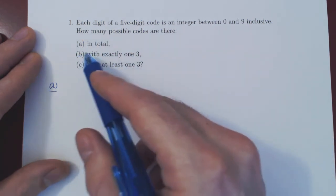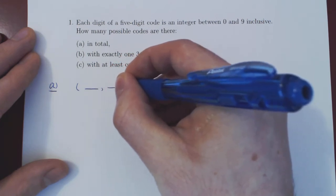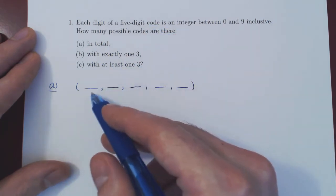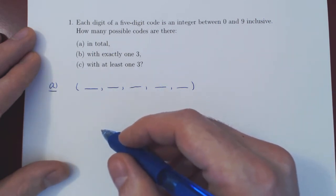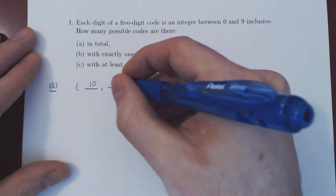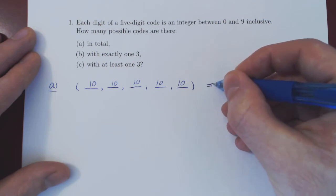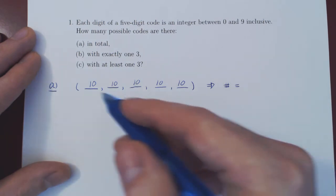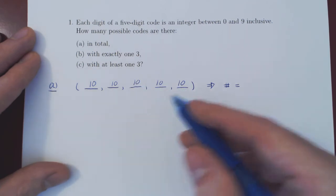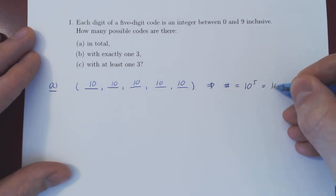We're asking how many possible codes are there in total. A code is an ordered selection, as the order in which you enter the digits does matter. We have to choose digits one through five, and for each digit there are 10 options. So the total number of possible codes is 10 × 10 × 10 × 10 × 10, which is 10 to the 5, or 100,000.